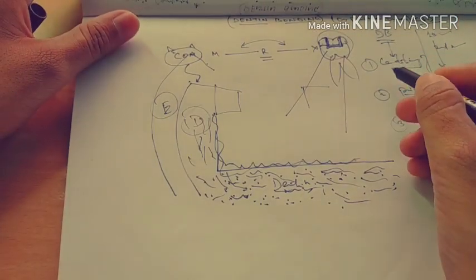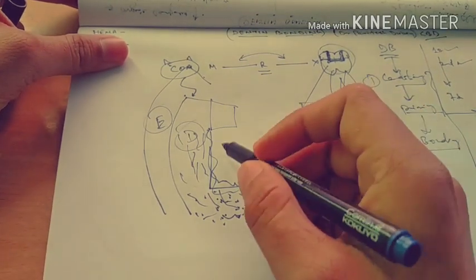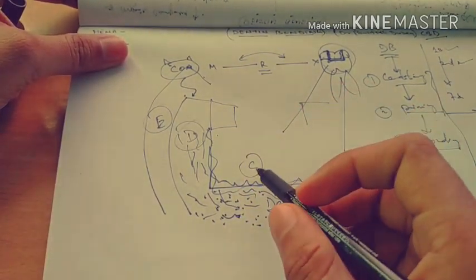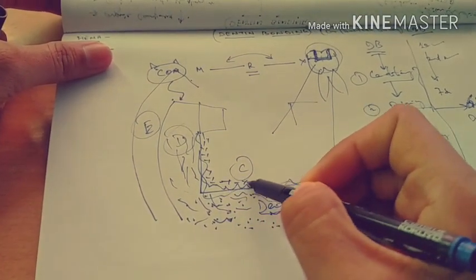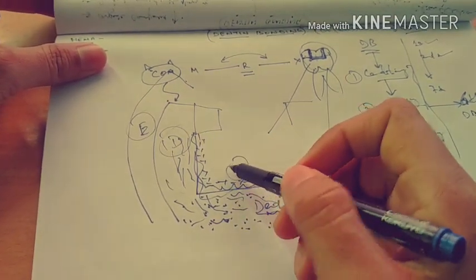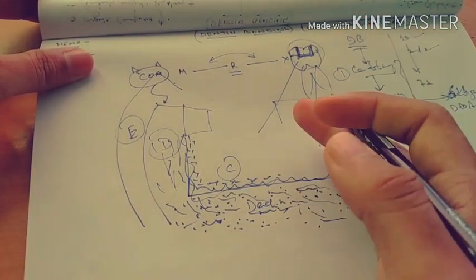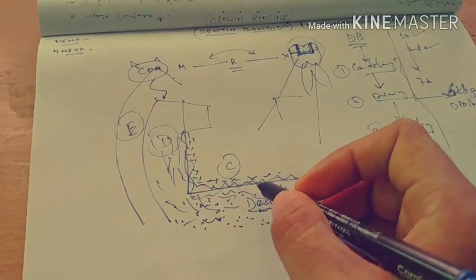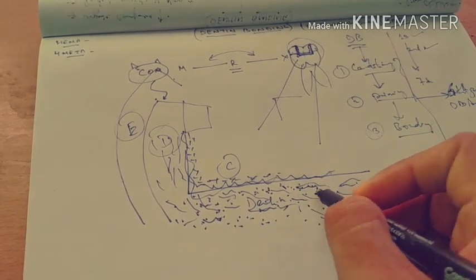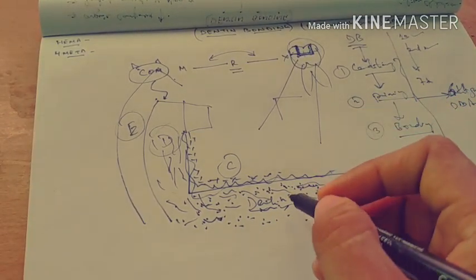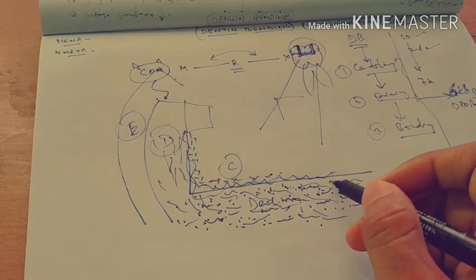When we are working step by step — say it's not a sixth generation agent — we first apply the conditioner. What the conditioner does is simply remove the smear layer. This smear layer will be removed by the conditioner. In some conditioners, particularly acids, they also demineralize the dentin. After demineralization, what we lose is the inorganic material — the calcium hydroxyapatite crystals. What remains are the collagen fibrils, water, and other organic proteins.